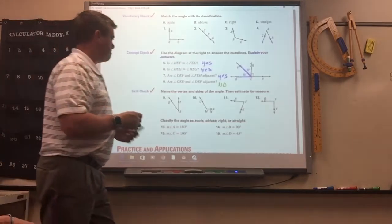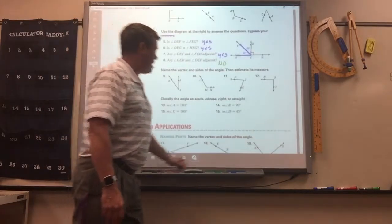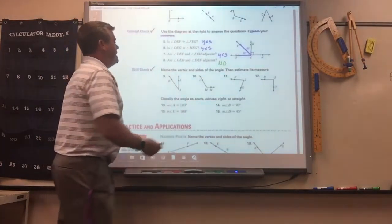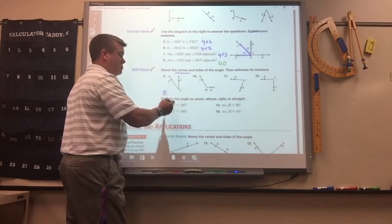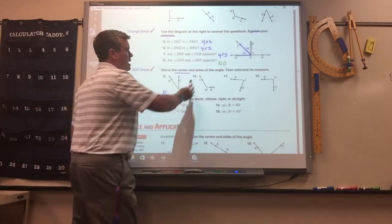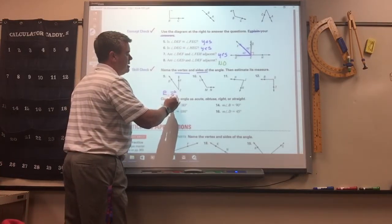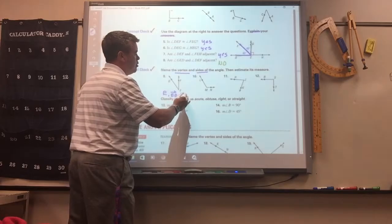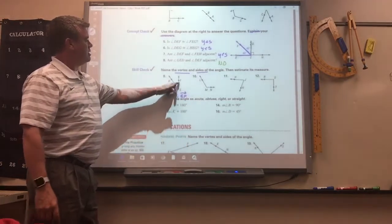Name the vertex inside. Okay, number nine, name the vertex, so we would just put E, just the point, comma. Name the sides, so it would be RE ED, comma RE EF. Remember, you've got to put the starting point, then the letter.